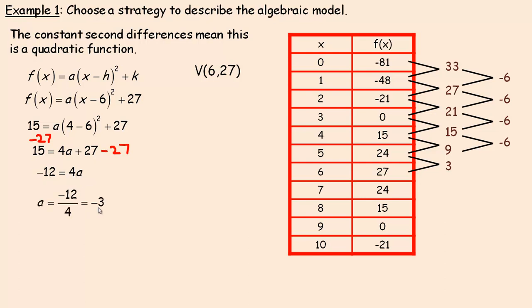The stretch factor A is negative 3. So we write negative 3 in place of A, and that's the function in vertex form: f(x) = -3(x - 6)² + 27. The vertex is at (6, 27) and we can use this to answer questions.